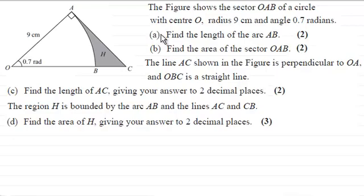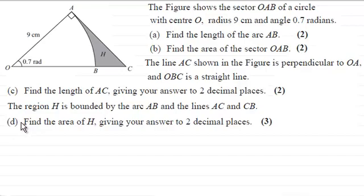For the first two parts, A and B: for part A we've got to find the length of the arc AB for two marks, and in part B, find the area of the sector OAB for two marks. It's only these two parts that I'm going to do in this video. If you want to see parts C and D, you'll have to check out my next video. If you'd like to have a go at this, just pause the video for a moment.